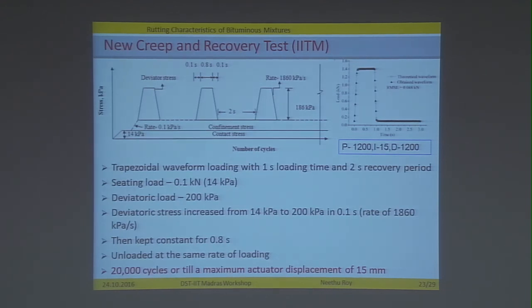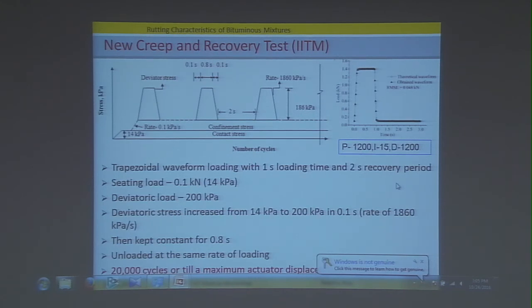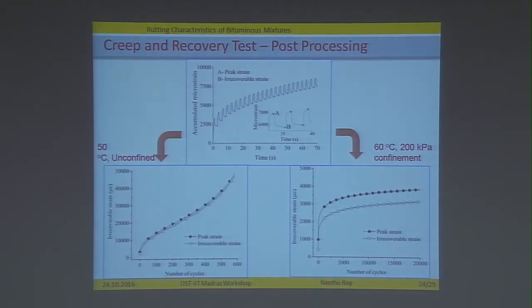The next modification tried was addressing the fact that haversine loading does not have a constant creep stage. A new protocol uses a trapezoidal waveform — increasing load at a particular rate, keeping it constant for some time, then decreasing at a rate — with 1 second loading and 2 seconds recovery period. This was done at a low deviatoric stress of 200 kPa at confined and unconfined conditions, and the entire data was captured. Results show that at 50°C for an unconfined specimen the material reaches the tertiary stage, whereas at 60°C with 200 kPa confinement the material remains in the primary or secondary stage only.